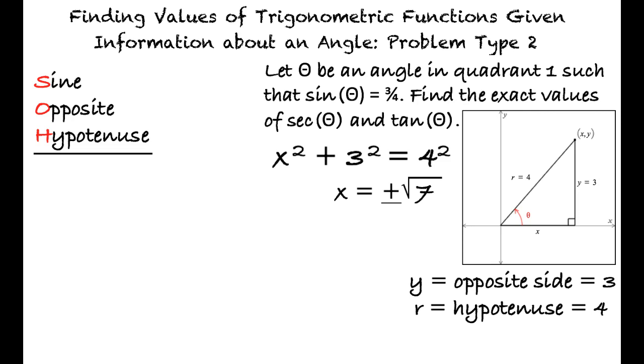However, since we know that the angle is in quadrant 1 where both x and y are positive, the x coordinate must be the positive square root of 7.